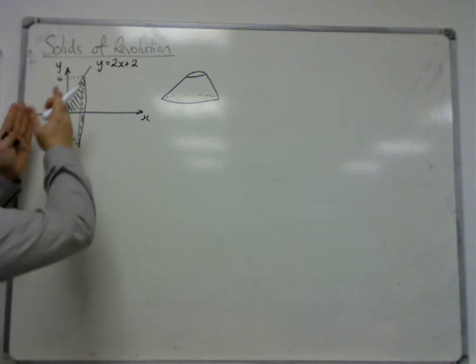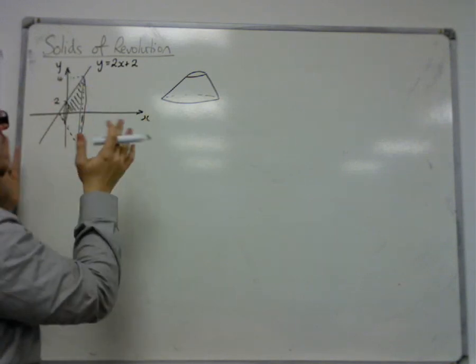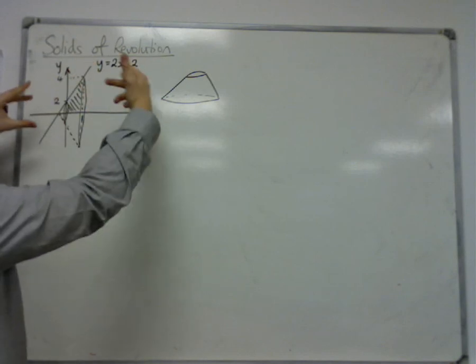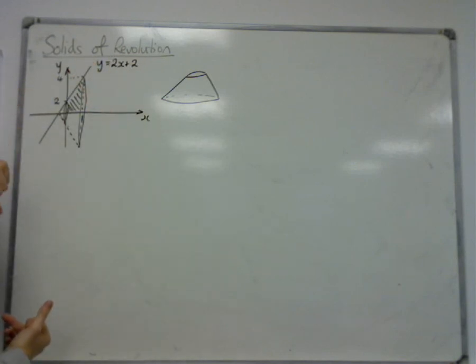Because, obviously, if this was just a straight horizontal line, then this would be a cylinder that is rotated around. That would get a cylinder.